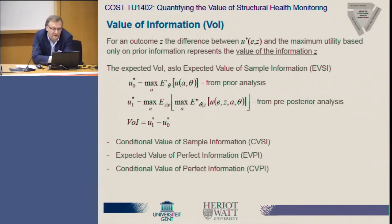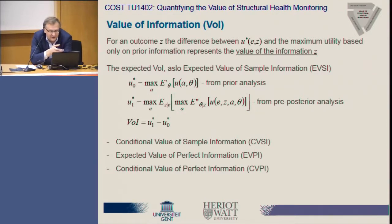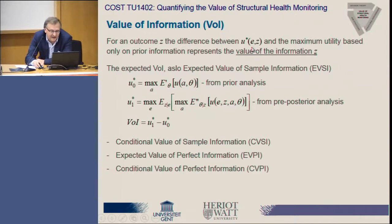One of the main applications of pre-posterior analysis is the calculation of the value of information. We first define the value of information for a particular outcome or particular piece of information Z. As seen in the extensive form of pre-posterior analysis, for each action and state of the structure, we calculated the maximum expected utilities U-asterisk for any combination of experiment E and its outcome Z. If we consider the difference between this utility and the maximum utility from prior analysis without any experiments, this represents the value of information for this particular piece of information Z.